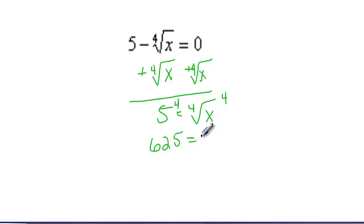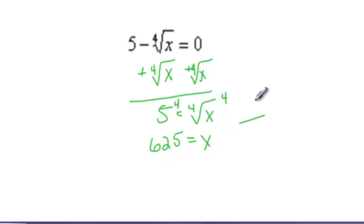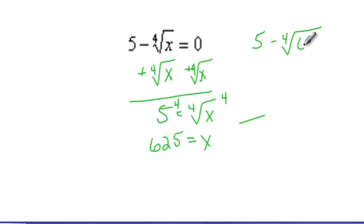Then I'm going to raise both sides to the 4th power. 5 to the 4th power is 625, I believe, and x is equal to that. So if I plug it back in, I say 5 minus the 4th root of 625, and that's equal to 0.